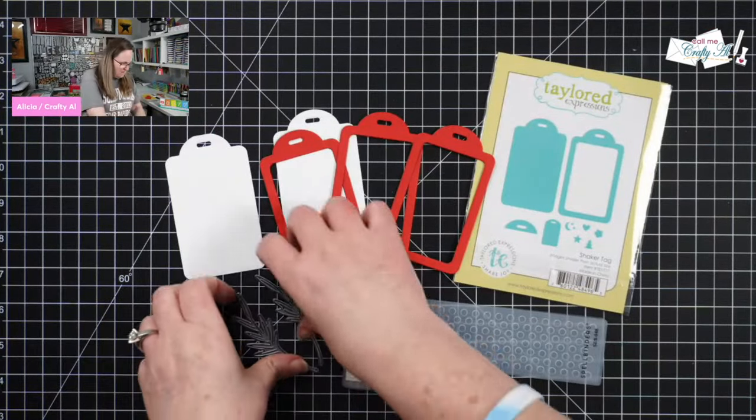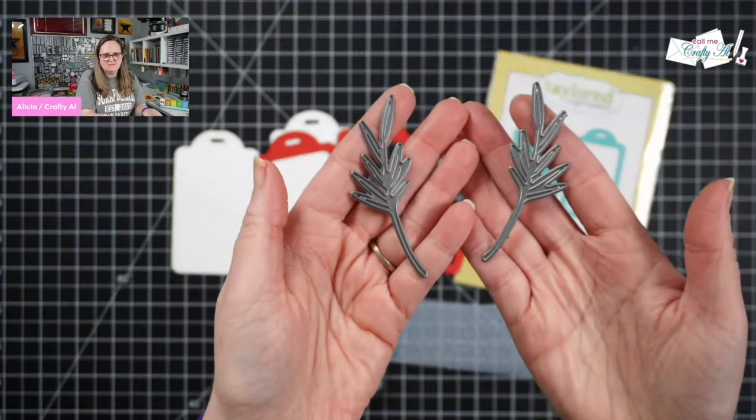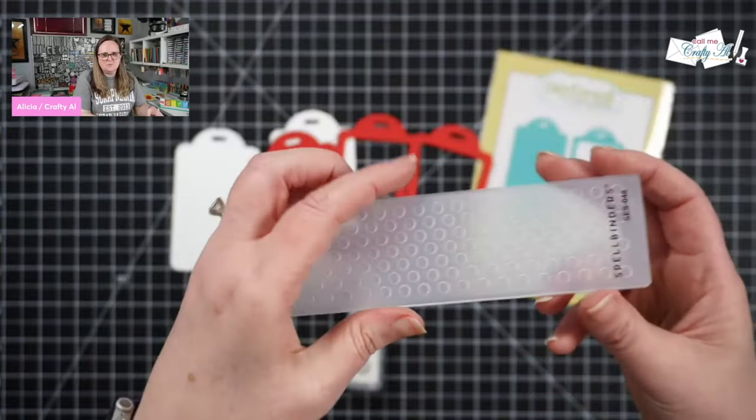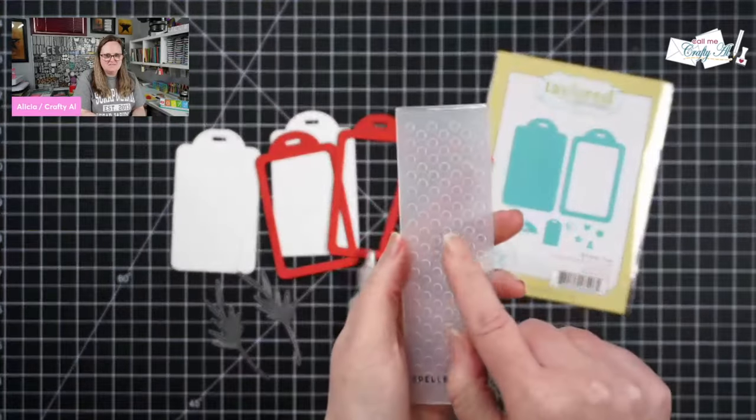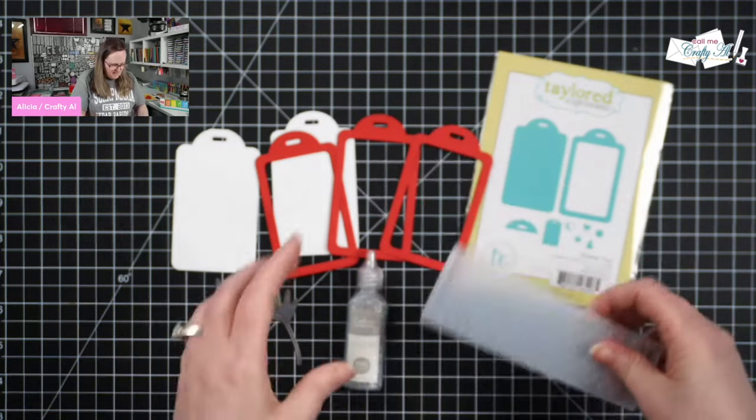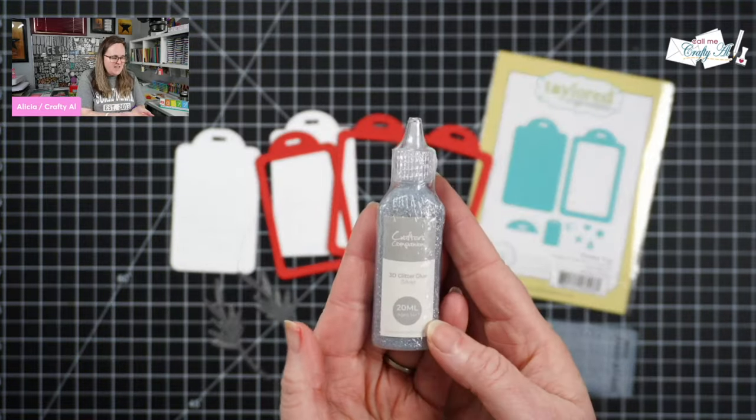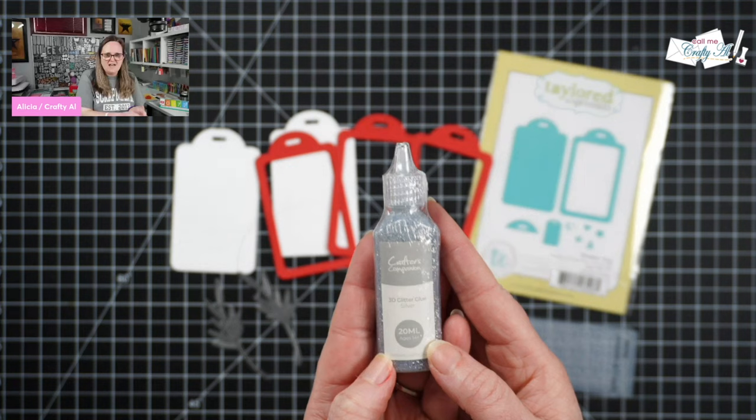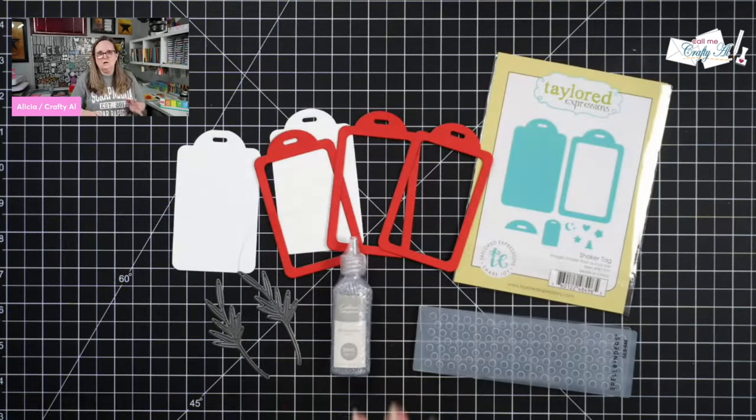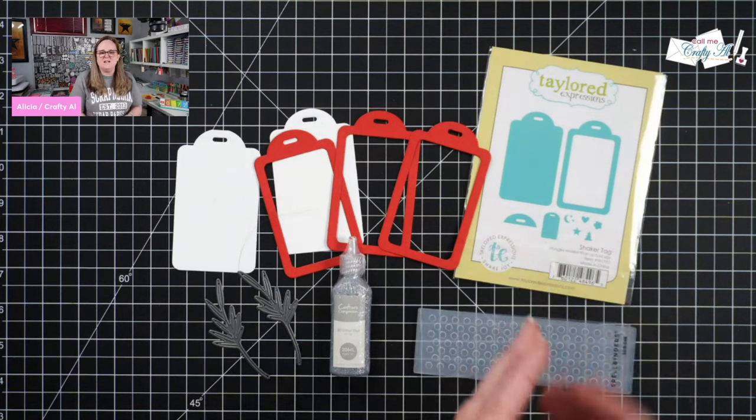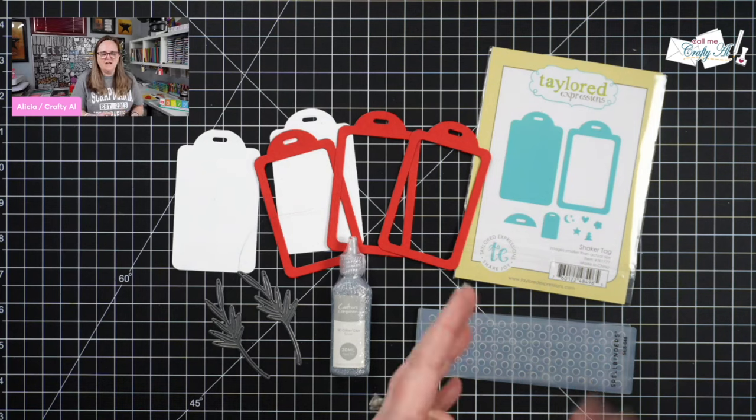So we did open up all of the day five gifts from Tailored Expressions. We got these little viney or leafy dies from Spellbinders, this border embossing folder, and the company that was chosen to craft with was Crafter's Companion with 3D glitter glue today in silver. Before the final give up, I had chosen to use this Tailored Expression shaker tag. I'm not going to make a shaker out of it, but I thought it would be nice to switch the tag up today.